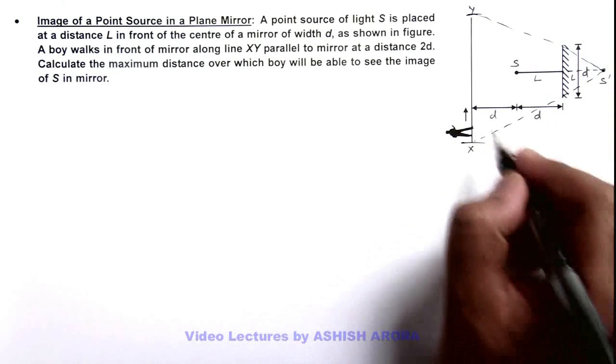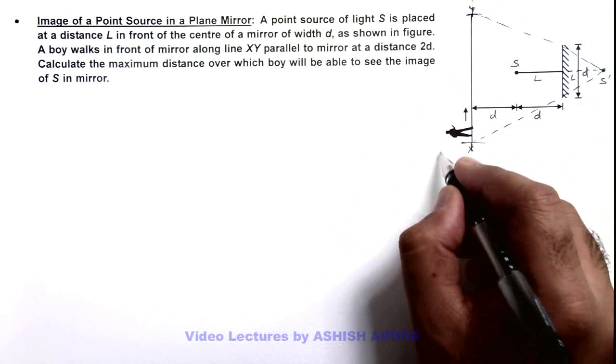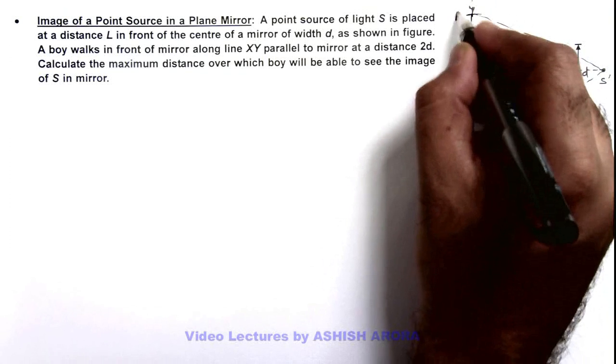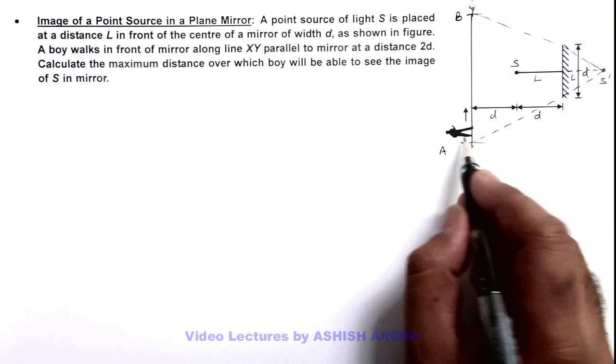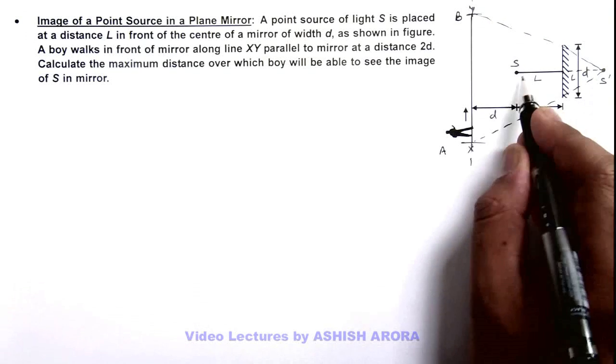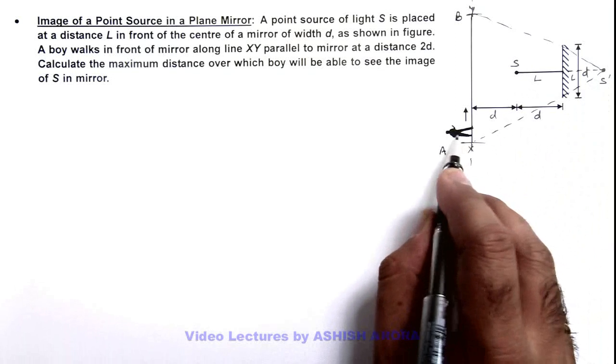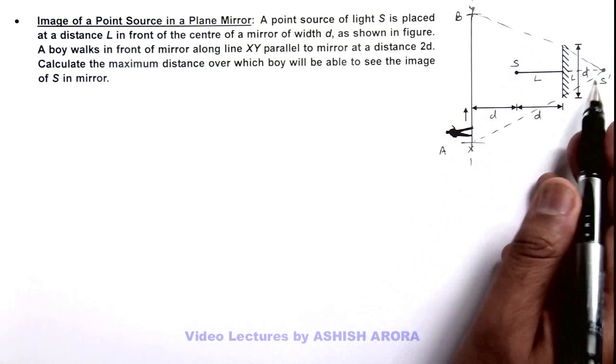So these are the two points on this line XY which I can write as A and B. In this region the boy will be able to see this image S dash for the source. So we can see, the time it is there within the field of view of the image of this source, its image will be seen.